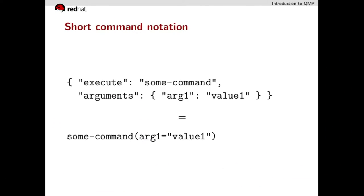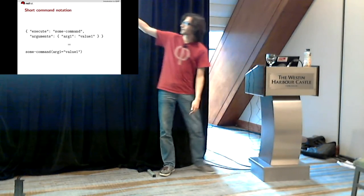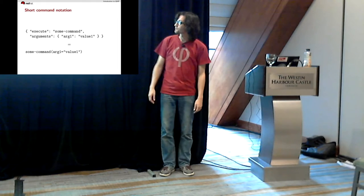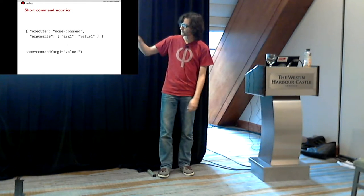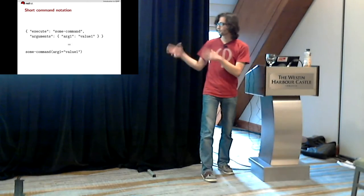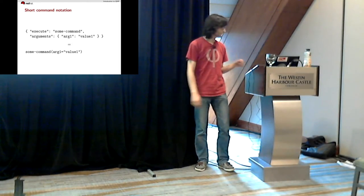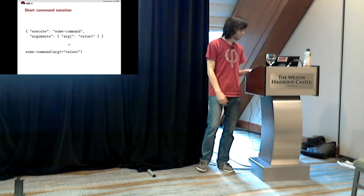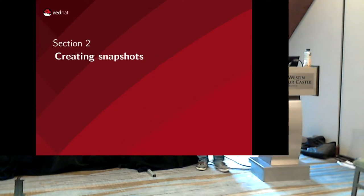In the following slides I'll use a slightly shorter command notation: instead of writing the full JSON object, I'll write the name of the command followed by parentheses containing all the arguments with names and values. It should be pretty obvious and shouldn't surprise anyone.